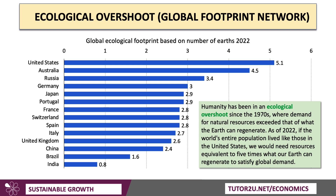There's an important concept known as ecological overshoot. Each year, the Global Footprint Network estimates the impact of demand for natural resources. Since the 1970s, that demand has exceeded what the Earth itself can regenerate. As of 2022, if the entire world population lived like those in the United States, we would need resources equivalent to five times what our Earth can regenerate to satisfy global demand.